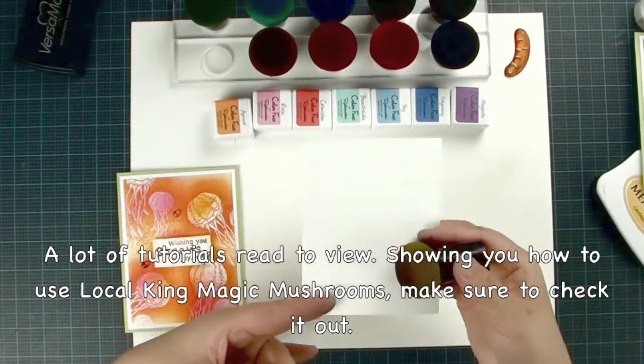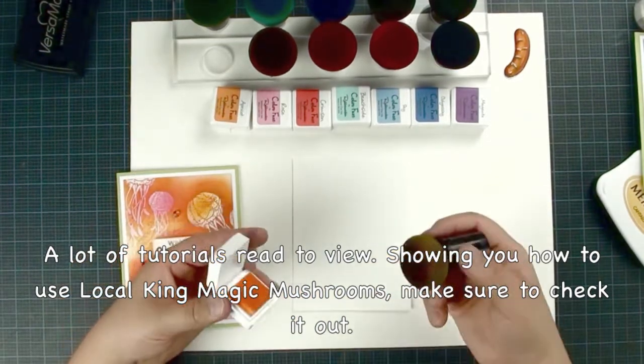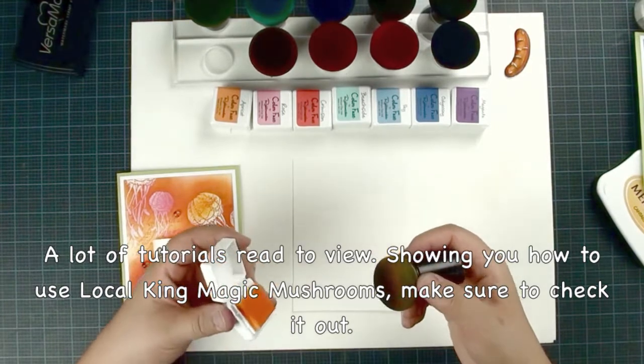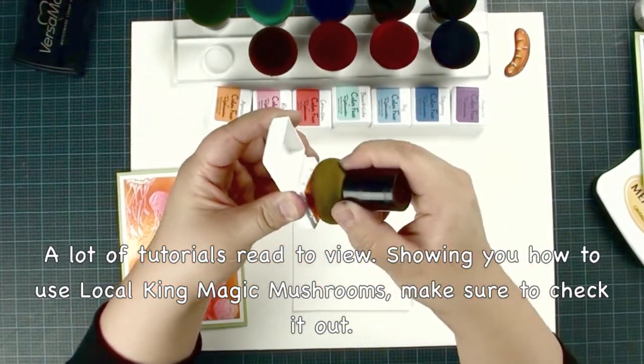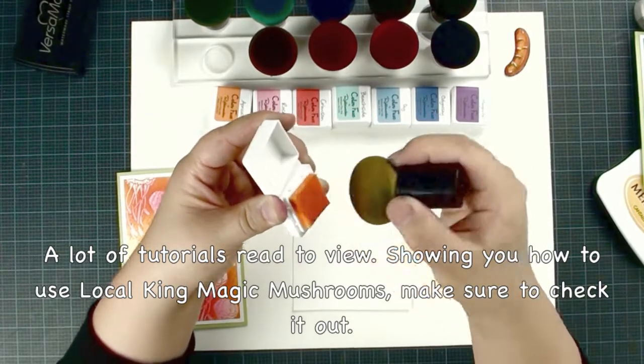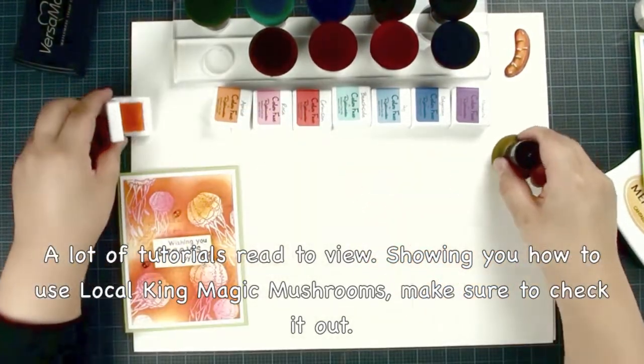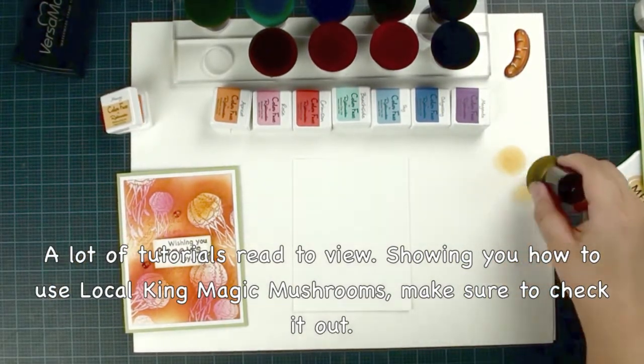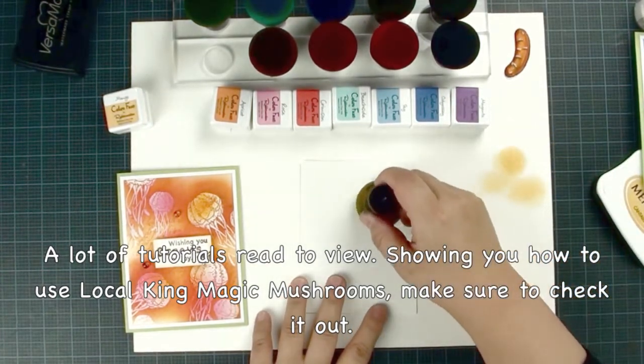We're going to use watercolor cardstock. I found watercolor cardstock blends better. This is Canson watercolor cardstock from Michael's. You can rub in or tap in, they both work well. I prefer gently rubbing. You can always test on your scrap paper. We want a very light color. Just gently tap.